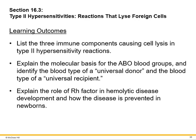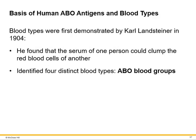Section 16-3 covers Type 2 hypersensitivity reactions that lyse foreign cells. These reactions target cells for destruction, and then complement comes in and destroys or lyses the cell. The most common example is the ABO blood type interactions.